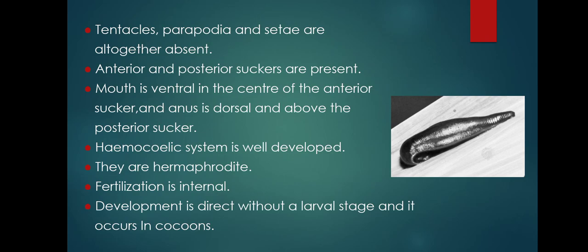The hemocoelomic system is well developed — a body cavity that normally contains blood and functions as part of the circulatory system. They are hermaphrodite, meaning both male and female sex organs are found in the same individual. Fertilization is internal, meaning after the fusion of male and female gametes, a zygote is formed inside the body of the individual.